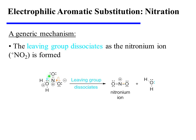As water dissociates, a lone pair of electrons from the negatively charged oxygen is pushed towards nitrogen to create a new nitrogen-oxygen pi bond. The result is water and the nitronium ion, which acts as the potent electrophile in this particular EAS reaction.